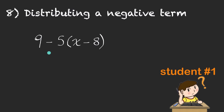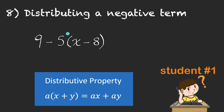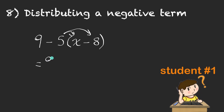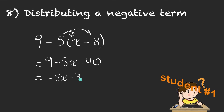I just need to simplify this. I remember distributive property — you take whatever is in front of the brackets and multiply it by everything in the brackets, and then the brackets are gone. So I've got this 9, I'll leave that there. Minus, and then I have to do 5 times x, that's 5x. And 5 times negative 8, that's negative 40. And then I can collect my like terms. 9 minus 40 is negative 31. So I've got negative 5x minus 31.